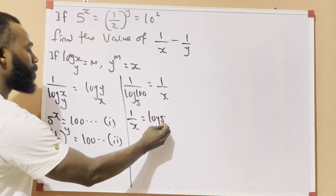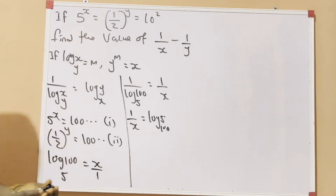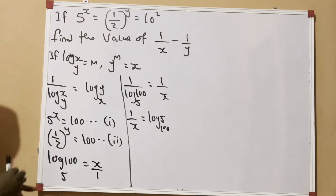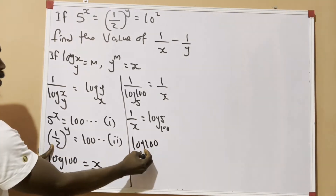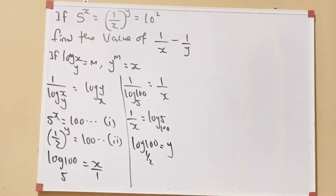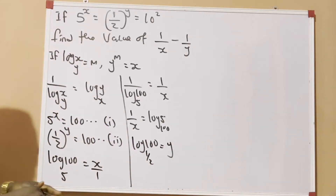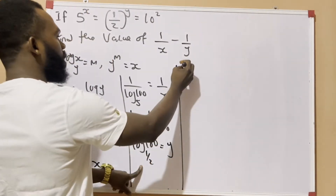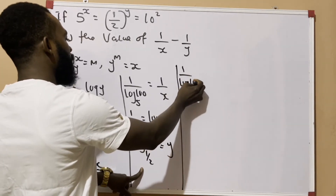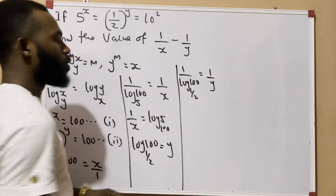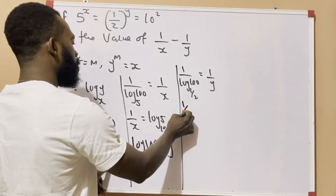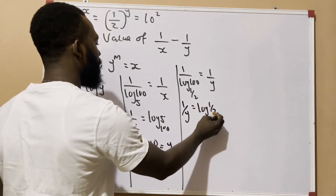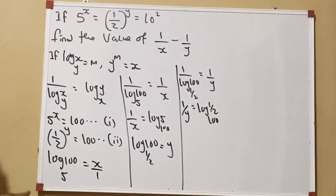Now let's find 1 over y. From equation 2, we have 1 over 2 raised to the power of y equals 100. Following the first rule, in log form: log 100 base 1/2 equals y. To get 1 over y, I turn y upside down, so: 1 over log 100 base 1/2 equals 1 over y. Using the second rule, this becomes: 1 over y equals log 1/2 base 100.